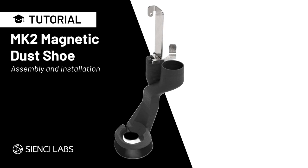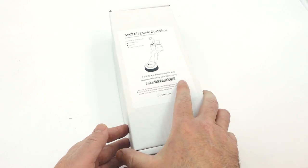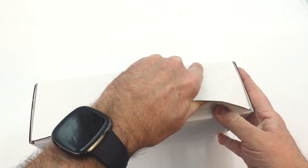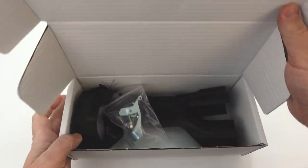Hello CNCers! Today we're going to be assembling the release trigger for the MK2 dust shoe. In the box you'll find everything needed to get your dust shoe connected to your long mount. Some assembly is required for the dust shoe but it's very easy.